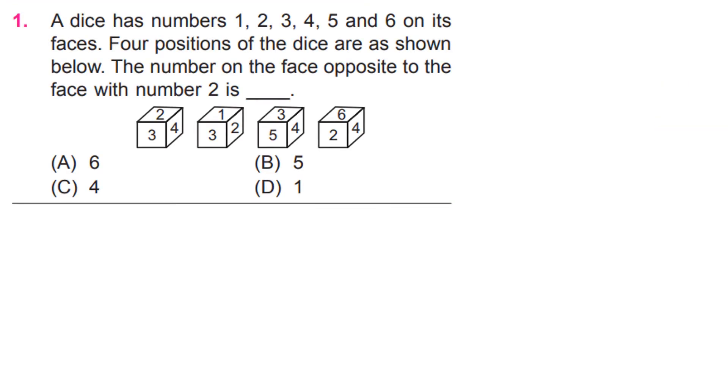A dice has numbers 1, 2, 3, 4, 5, and 6 on its faces. Four positions of the dice are as shown below. The number on the face opposite to the face with number 2 is: Look at the blocks. B, 5.